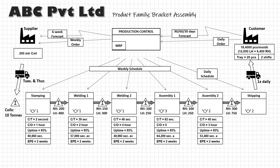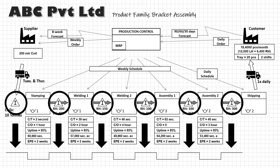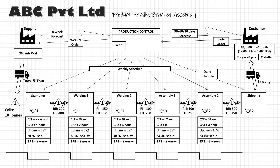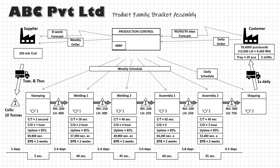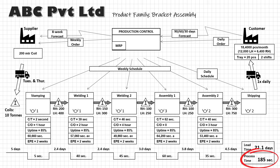Finally, the moment of truth. We will plot the timeline at the bottom of the map using an up-down line. The up section falls under the inventory and the down section falls under the process box. Write down the lead time in days in the up section — you can calculate this by dividing the inventory quantity by the daily customer requirement. Write down the cycle time in the down section for each process. In the bottom right, add up the total inventory time for an estimate of your lead time, and add up the cycle time for the total value-addition time. In the ABC organization, the total processing time to make one piece is only 185 seconds, whereas that piece takes more than 21 days to travel through the plant.